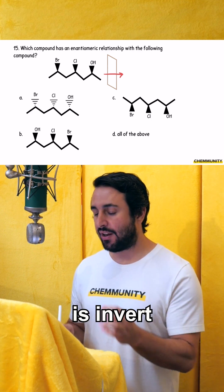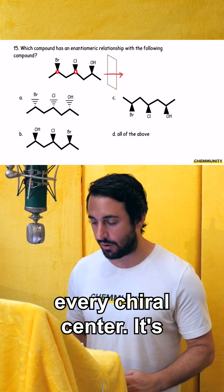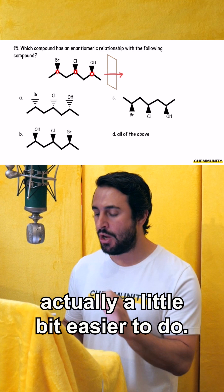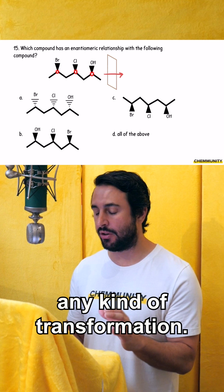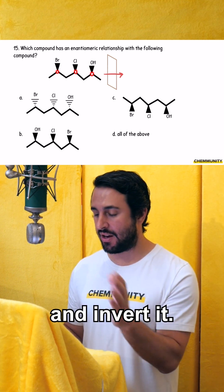The other thing that you can do is invert every chiral center. It's actually a little bit easier to do. You can just leave the molecule precisely as it is. You don't have to visualize any kind of transformation. Take every chiral center and invert it.